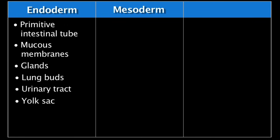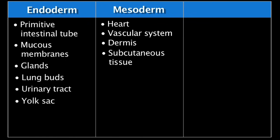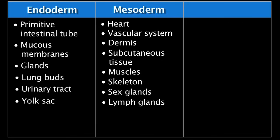The mesoderm, or middle layer, gives rise to the heart and vascular system, the dermis, subcutaneous tissue, muscles, skeleton, sex glands, lymph glands, kidneys, connective tissue, and blood cells.